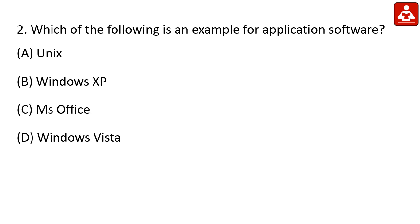Which of the following is an example of application software? System software examples are Windows XP, Unix, and Windows Vista. But Option C, Microsoft Office, is an application software.